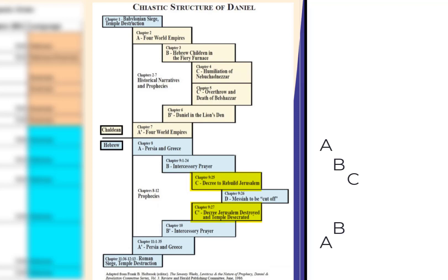The C section is Daniel 9:25 and 9:27 — the decree to rebuild Jerusalem and the decree that Jerusalem would be destroyed and the temple desecrated. Then the innermost level of the chiasm: the Messiah would be cut off in 9:26.